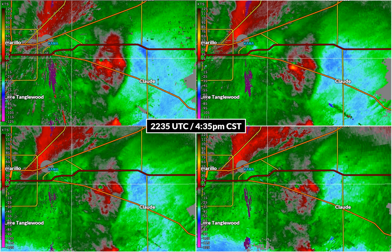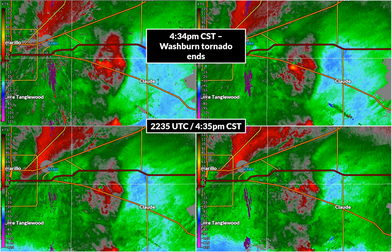Looking at this image at 4:35 p.m. Central Standard Time — one minute before this, at 4:34, the Washburn tornado ended. As the storm moved northeast, we issued an additional tornado warning for Carson County, especially the city of Panhandle. The reason we did this was that, as we have seen with this radar data over the last hour and a half, this storm was able to repeatedly produce tornadoes, and we wanted to be sure it was done producing them before we quit putting tornado warnings on it.